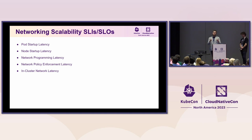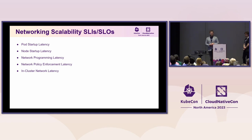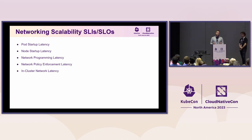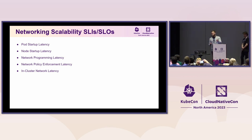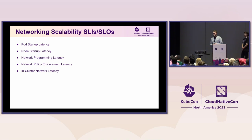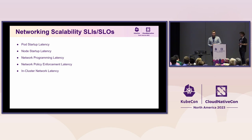We need to understand when our cluster is happy, which requires SLIs and SLOs. A few examples we care about when scale testing Kubernetes networking: pod startup latency — how much time it takes for pod connectivity to be up; network programming latency — how much time it takes for backends behind services to be propagated across the cluster; how long it takes for network policies to be applied; and in-cluster network latency and throughput. These are just a few examples, but they are mostly related to networking.